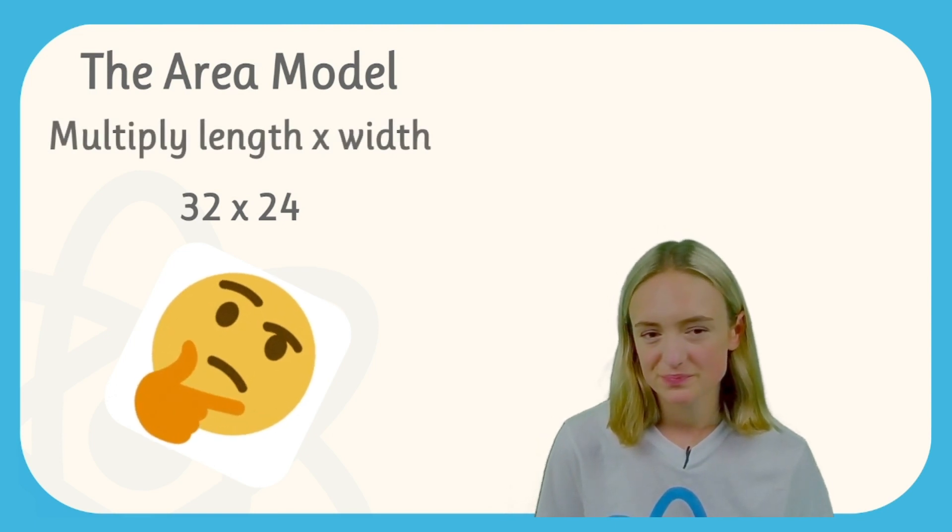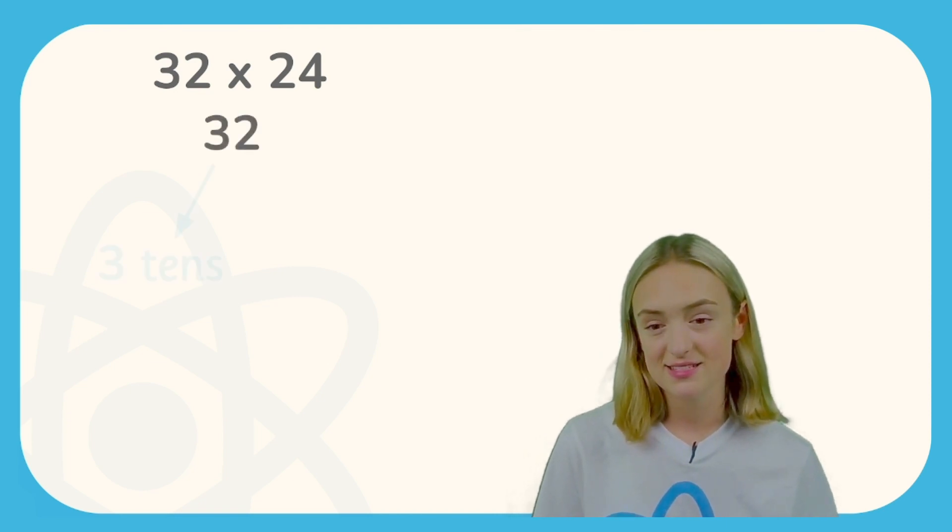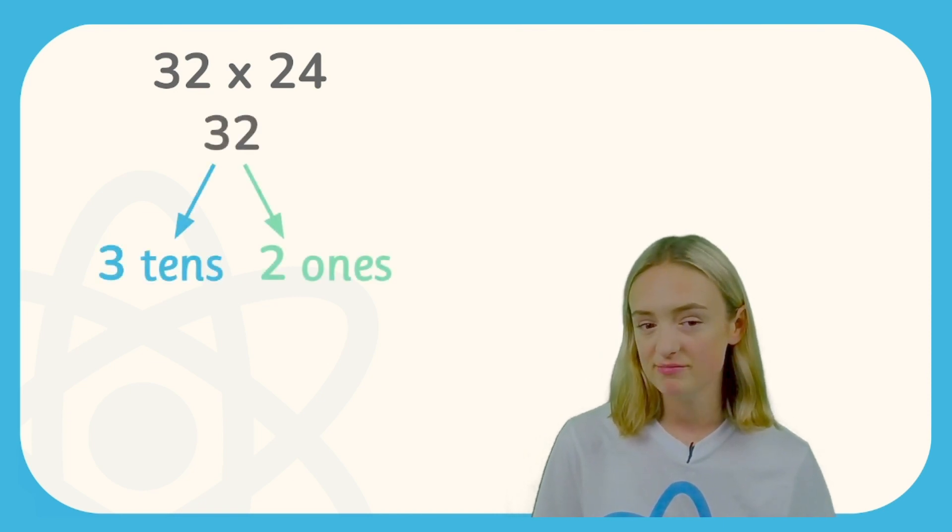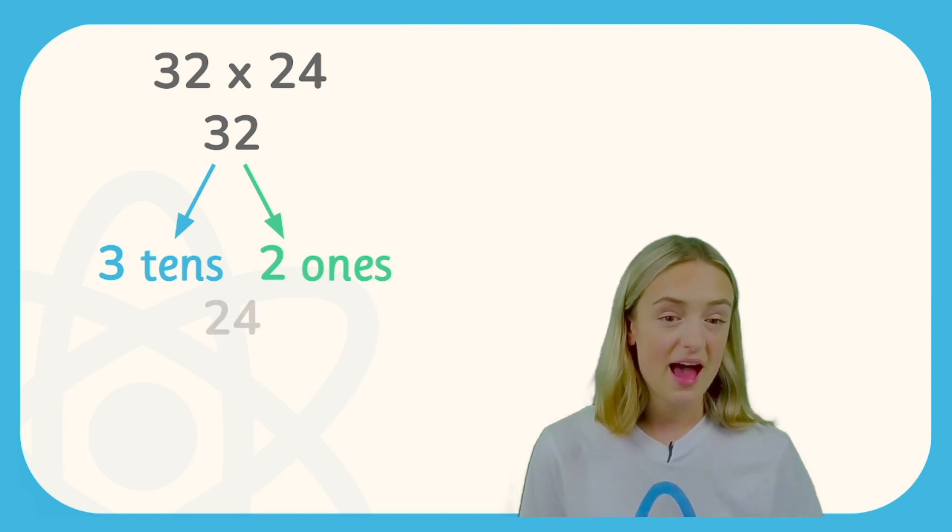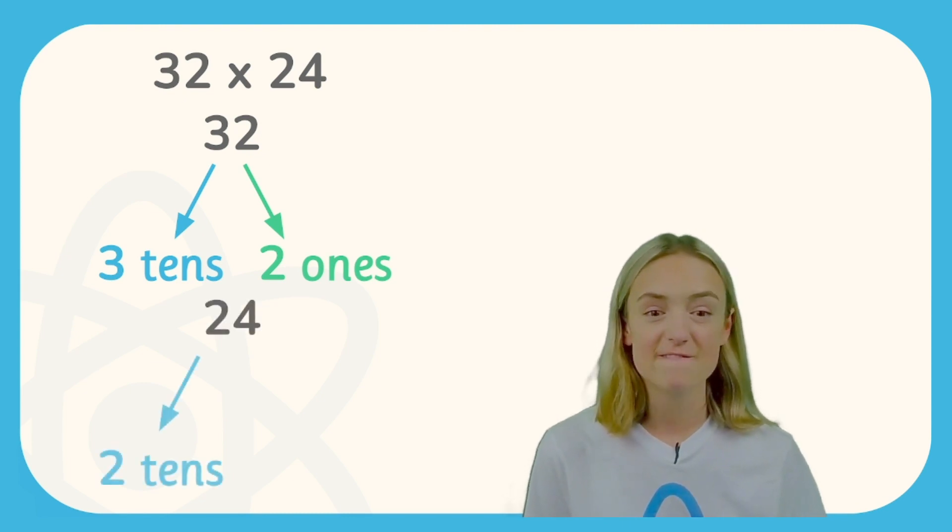So what we need to do is we need to partition both of the numbers into their respective tens and ones. So 32 has three tens and two ones, and 24 has two tens and four ones.